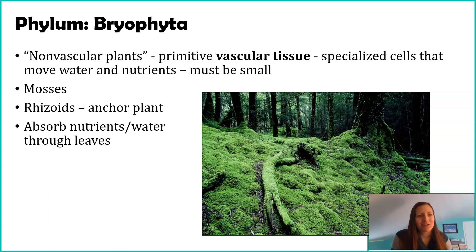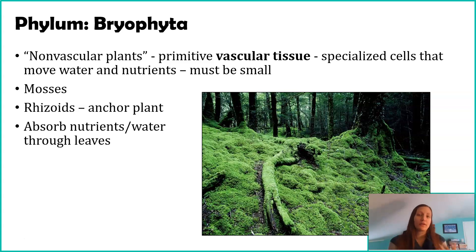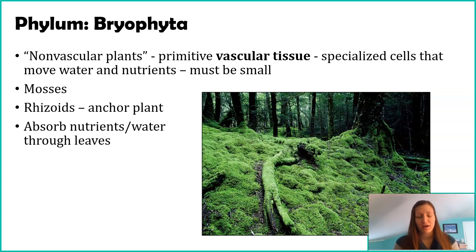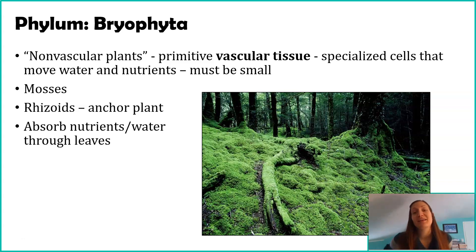These plants still need to get water and nutrients, and most of that is actually happening in the leaves — essentially the green part of the moss. It does happen, just in other parts of the plant. Because they can get water and move it around, that's why it's considered a plant and not algae — just not a very fast or efficient process, which limits how large the plant can get.